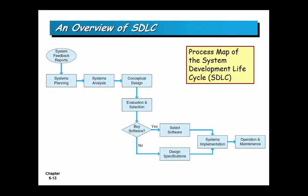This is the systems development lifecycle represented as a process map — a way to quickly visualize something using circles, arrows, boxes, and diamonds. We'll discuss process maps more in chapter 7B. The lifecycle starts with planning, analysis, and design. A diamond represents a decision point — for example, whether to buy software or build it. If yes, you go one path; if no, you go another.